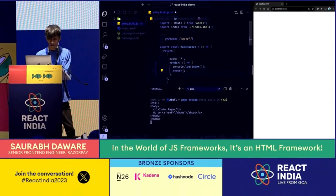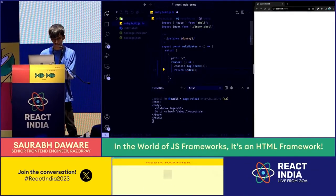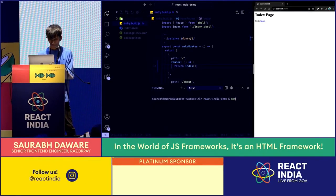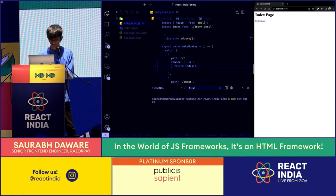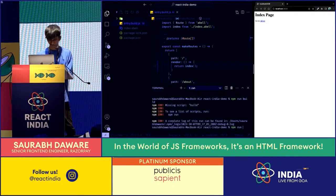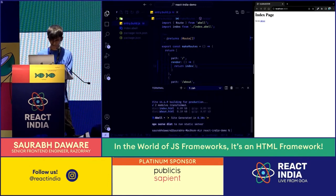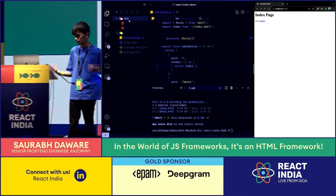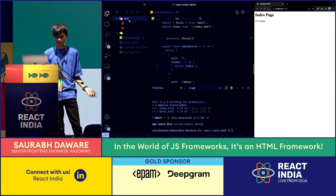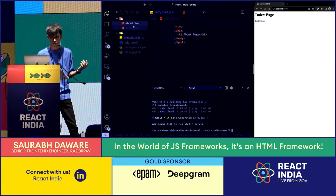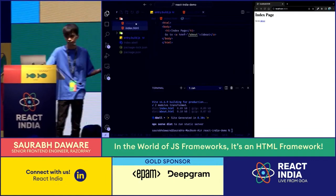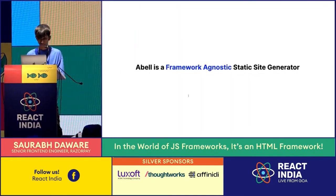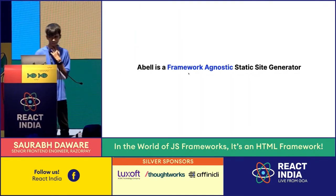One thing we haven't done yet is call the build. We've just seen the server. Let's call build and see what we get. Whenever you build, it never really outputs any JavaScript — it's not dealing with client-side JavaScript at all. It's just dealing with HTML. So your output will not have any JavaScript unless you write it. And that's how Abel is framework agnostic.